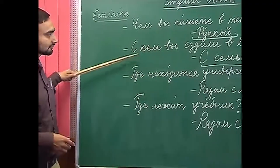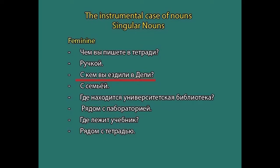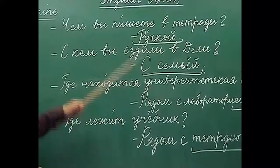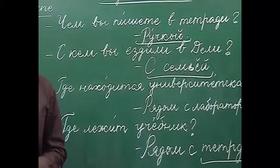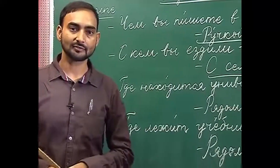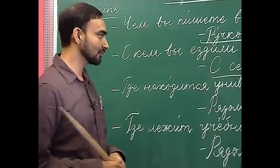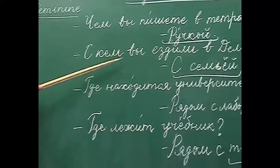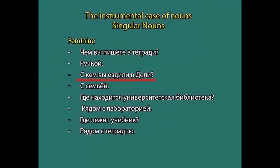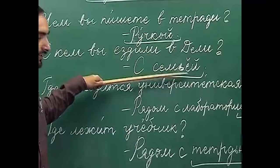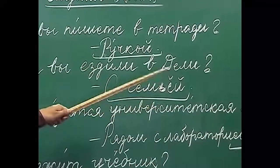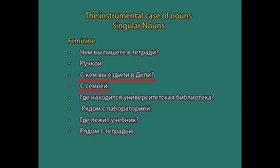The next example: 'с кем вы ездили в Дели?' — with whom did you go to Delhi? If you want to say 'I went to Delhi with family': я ездил в Дели с семьёй. Семья is the Russian word for family. When we come across a noun with -я ending, we drop -я and add -ёй (ё and е краткое): семья becomes семьёй. We will talk about why we use -ё later on.